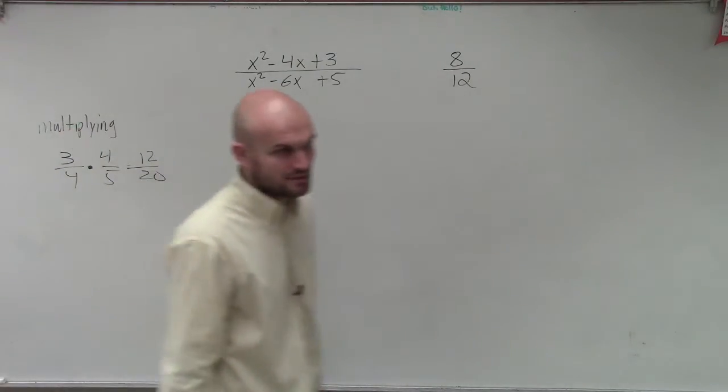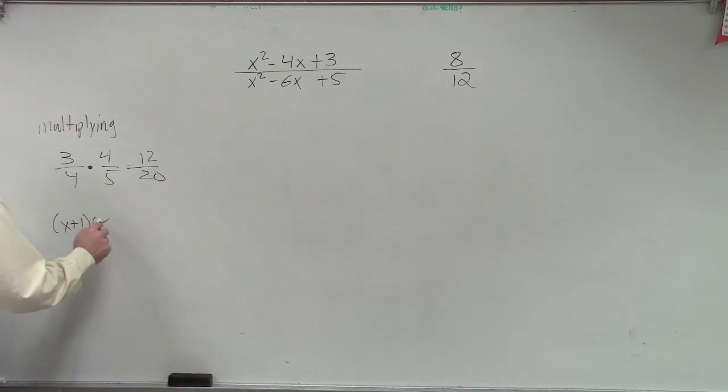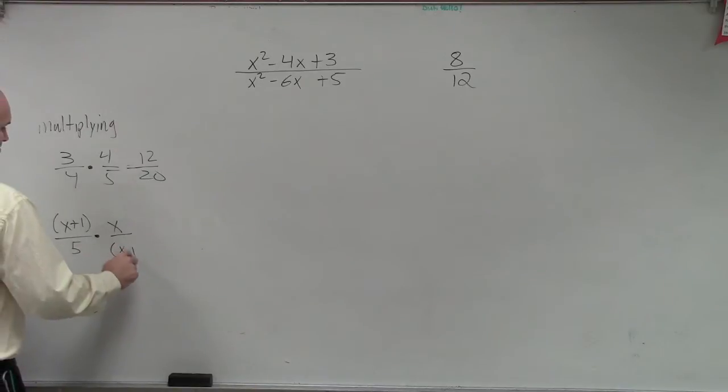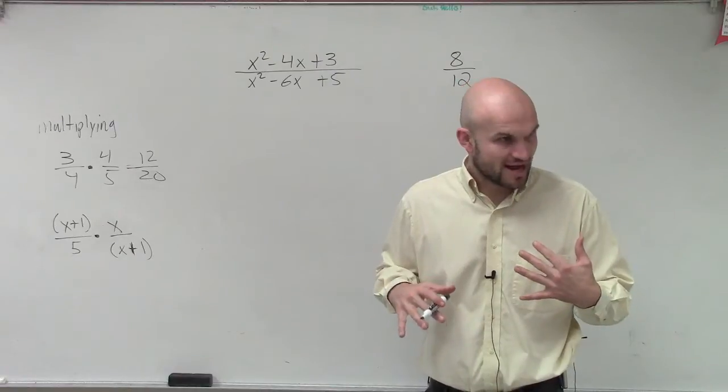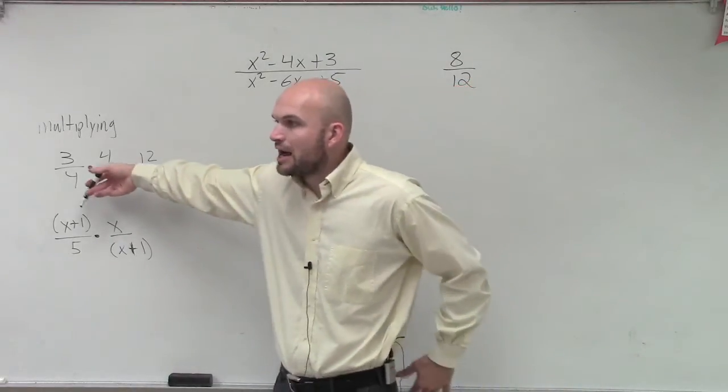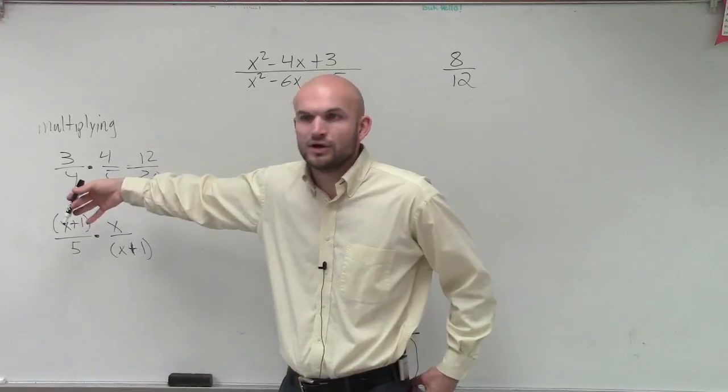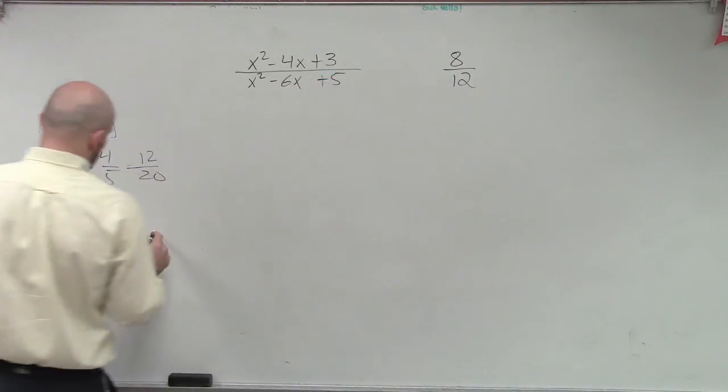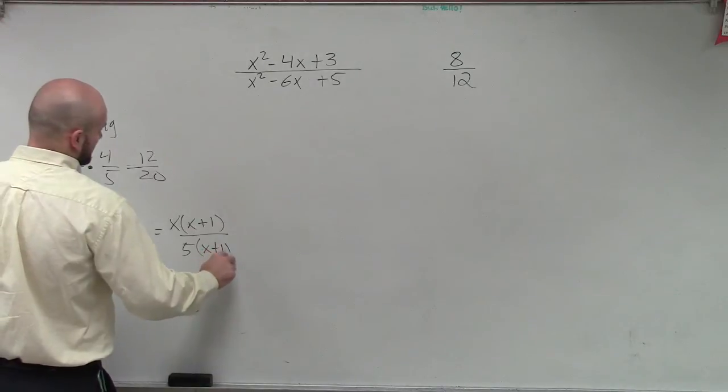Now, ladies and gentlemen, what if I just did something like this? x/(x+1) times 5x/(x+1). You're not going to want to cross multiply, but you just do the same thing, right? You multiply across, correct? It doesn't matter if it's a polynomial or if it is a number or a binomial or anything. You're just going to multiply across. So in this case, I would have x times x+1 divided by 5 times x+1.